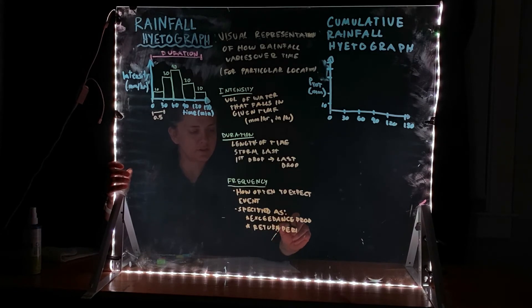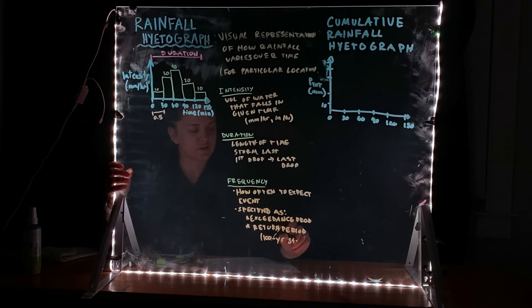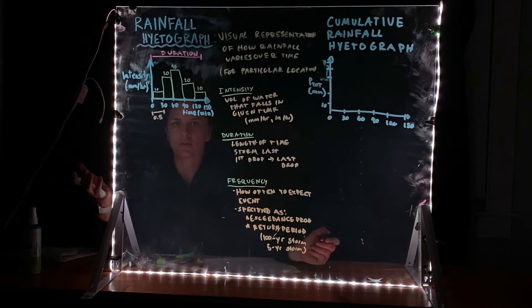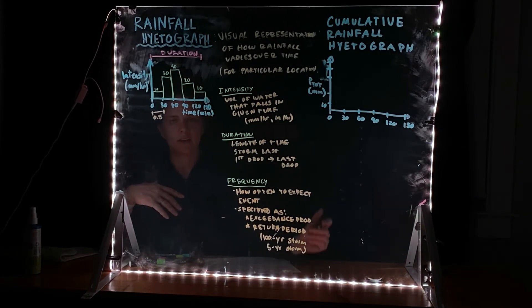And I know I've mentioned this previously and I will continue to mention this. This is when you hear a term like a 100 year storm or a five year storm. This is the return period and it's really just a frequency or a probability. And we'll talk in a subsequent video about exactly how to calculate that value.